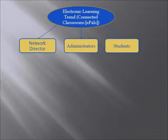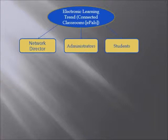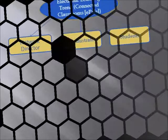For slide two, I've maintained the grayscale theme. The blue oval on top still has the topic header with white lettering and a gold border. On the left, there's an arrow pointing down to a gold box with a blue border that has 'Network Director' in it. In the center, I have another gold box with a blue border and its subtitle is 'Administrators' with blue type. The third box on the right is 'Students,' also gold with a blue border, a blue arrow coming down from the topic pointing to it, and blue type.